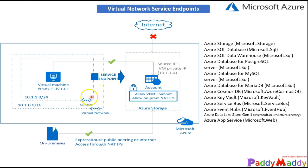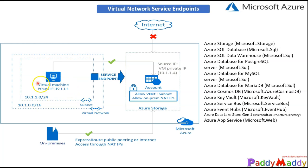Technically, when you select your subnet and create service endpoints to your Azure services, in the backend it creates and updates a route table. Based on that route, machines within the subnet communicate with the Azure service via the service endpoint.